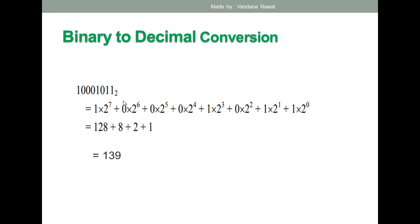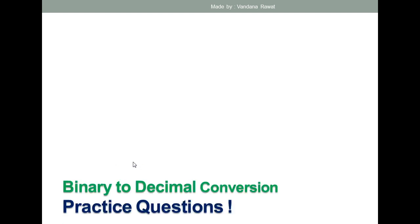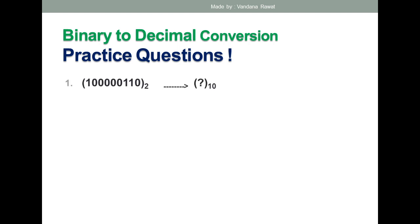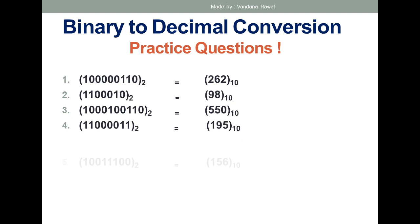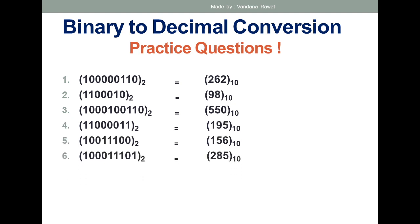In the answer you get 139. That is the decimal equivalent of this binary number. Now solve this example on your own. I'm giving you six practice questions — convert each binary number into decimal by yourself first, then check the provided answers.